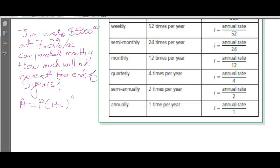If they're going to ask you a compound interest question, they'll have to give you the formula and explain what each variable is. We want to work out A, and we know he started with $5,000. The interest rate is 7.2%.